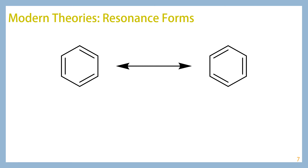We're going to look at some modern theories about the structure of benzene. The first is the importance of the resonance forms. I've drawn the two different ways you can draw benzene. The resonance forms show that you can take these pi electrons and shift them, which causes the other pi electrons to shift as well, giving us the second structure. The second structure can be reverted back by shifting electrons again. These two equivalent resonance forms are part of the reason benzene is so stable.